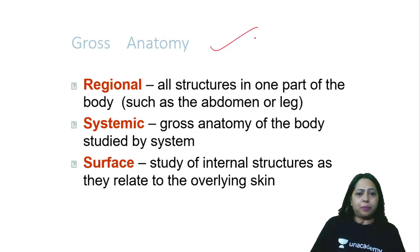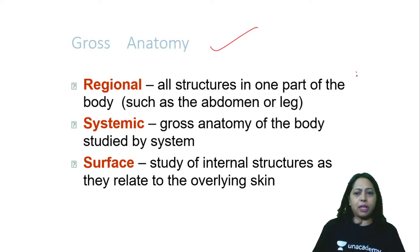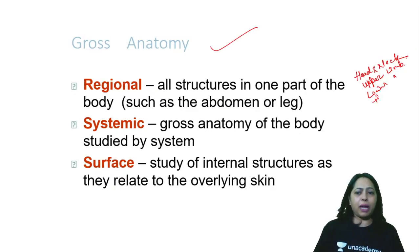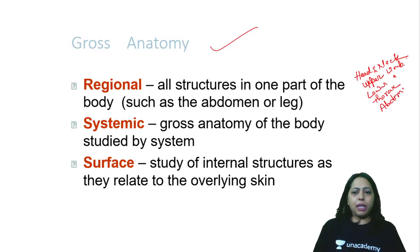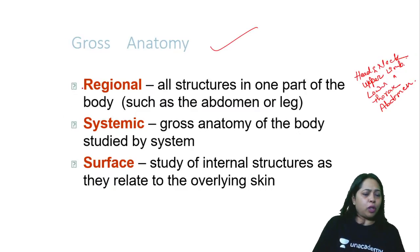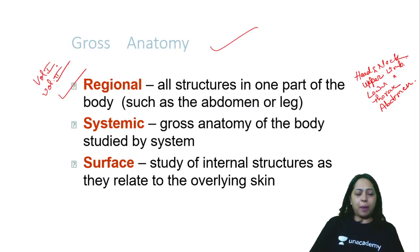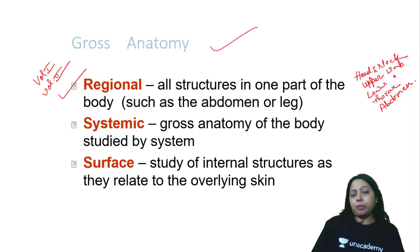In gross anatomy we have regional anatomy, which depends on what region you want to learn about — head and neck, upper limb, lower limb, thorax, or abdomen. These come in different volumes. The diaphragm is taken as a landmark: above the diaphragm is one volume and below the diaphragm is another. You can also study by system — systemic anatomy — covering muscular system, integumentary system (skin), skeletal system, urinary system, reproductive system, and others.